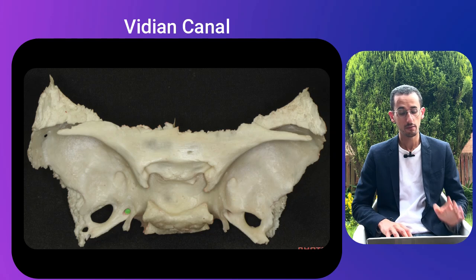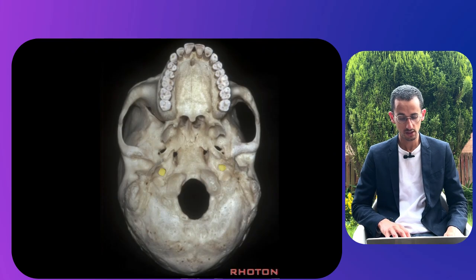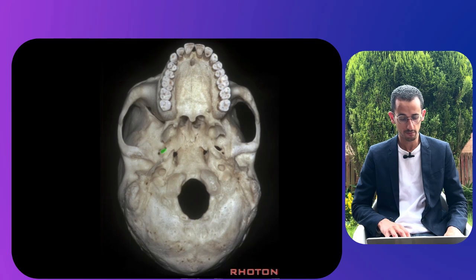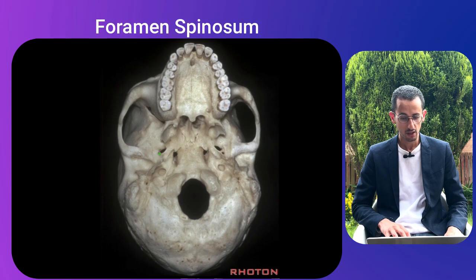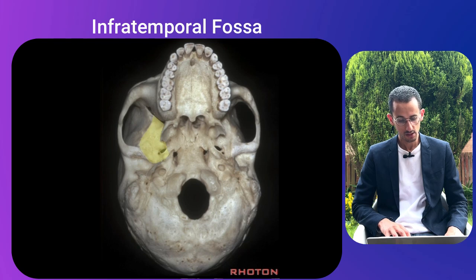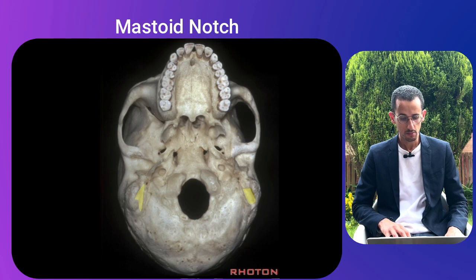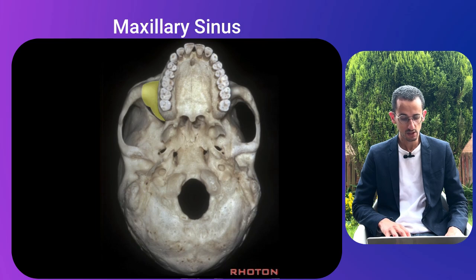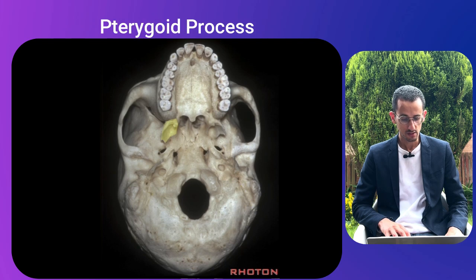This is the inferior view of the skull. Highlighted in yellow is the carotid canal, the foramen magnum, foramen ovale in green, foramen spinosum, the infratemporal crest, the infratemporal fossa, the mastoid notch, the mastoid process, the maxillary sinus, the occipital groove, the pterygoid process, the styloid process, and the zygomatic arch.